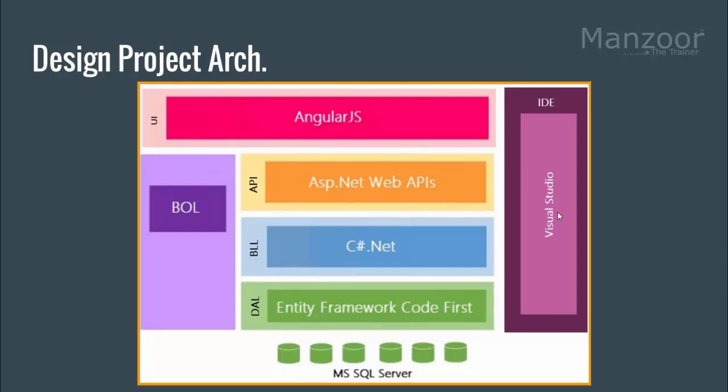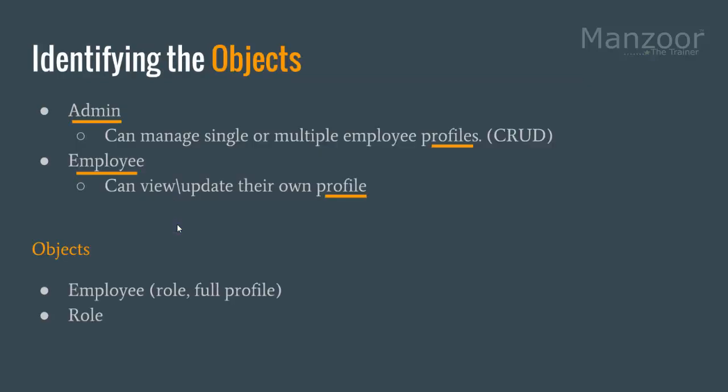To proceed further we need to understand our requirements, break them into objects, identify the relationships, and build the business object layer first. After looking into our requirements, we can say that we have two users who are going to access the application: one is admin, another is employee — the normal user. Admin can manage single or multiple employee profiles and perform all CRUD operations, whereas an employee can only view or update their own profile. So we have admin, employee, and profile as objects.